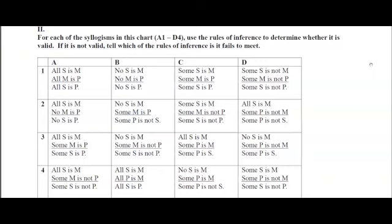Now, which one are we looking at? We're looking at A1 — just apply each of those rules in order to A1 and tell me whether it passes or fails. The premises are affirmative, so there's no negative premise — it passes that. What's distributed in the conclusion is also in the premises. The middle term must be distributed at least once, and it is — only distributed once, but that's all we need.